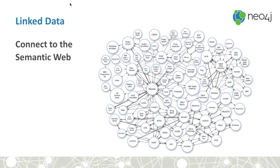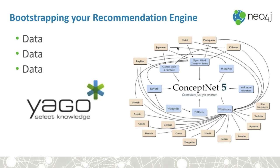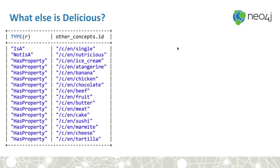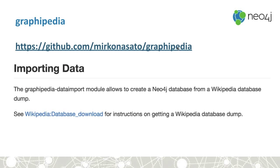One of the other things we can do is connect our data to other places — the semantic web, which has a lot more information we can pull from things we know about a user. One example we see a lot is using things like Yago or ConceptNet — knowledge bases that take what a computer understands about the world and let you have access to it. For example, the concept of sushi: it knows sushi is from Japan, mostly made of raw fish, and is delicious. We can ask what else is delicious — things like cake and cheese. These are concepts the computer knows about, and you can tie them together.